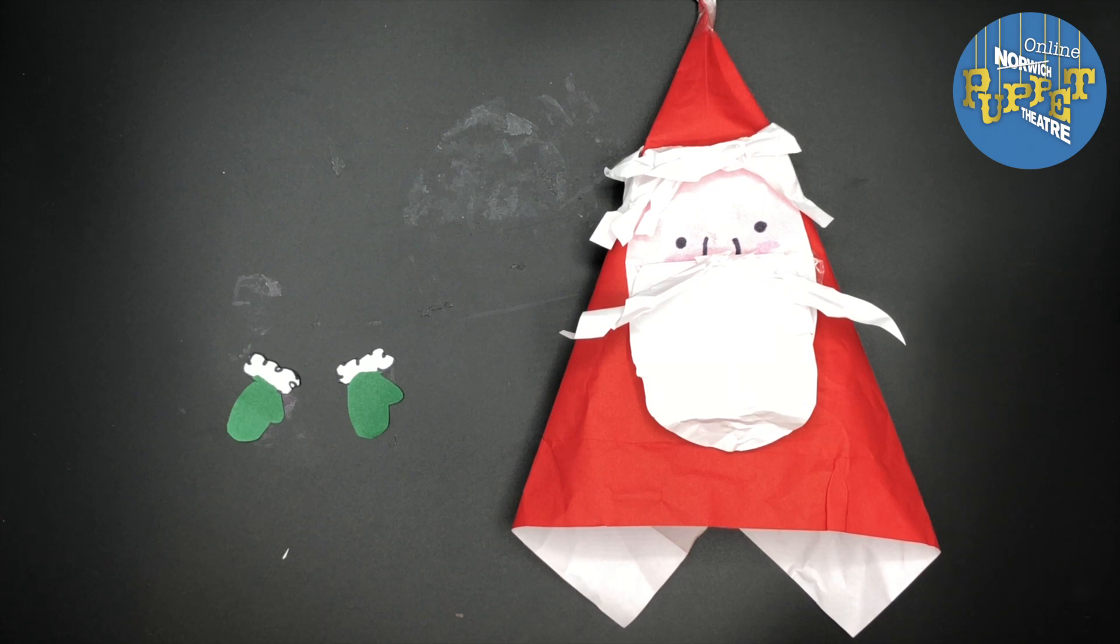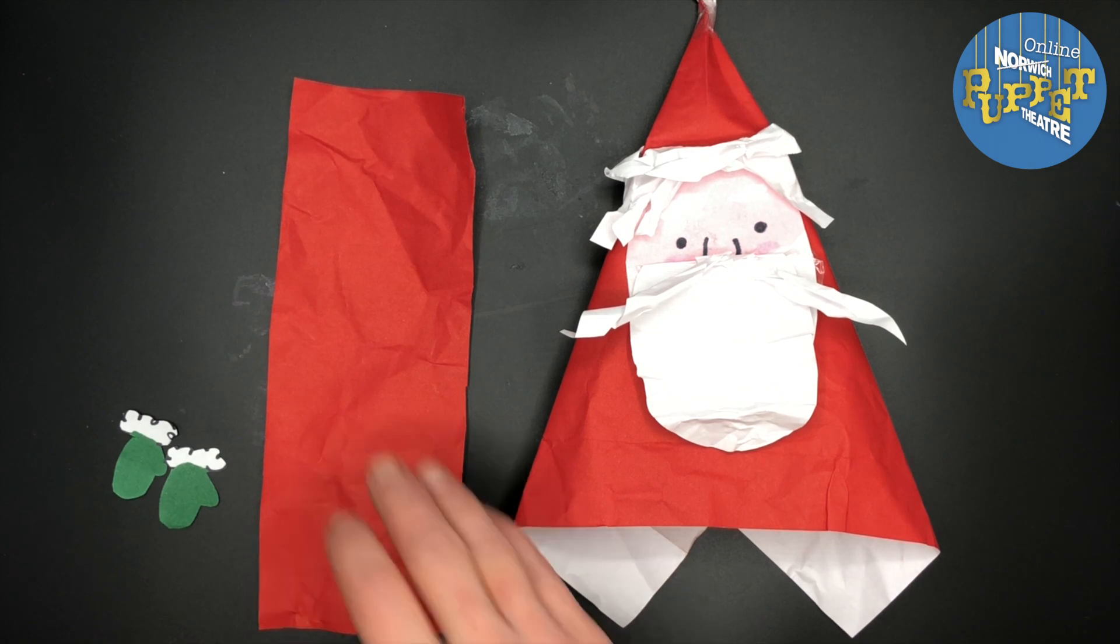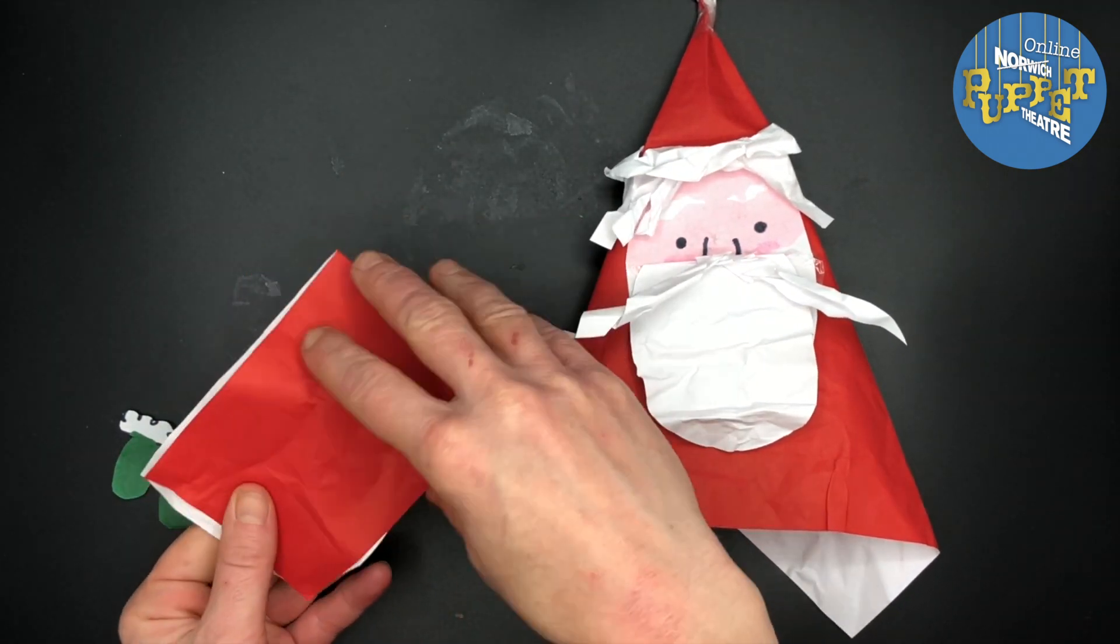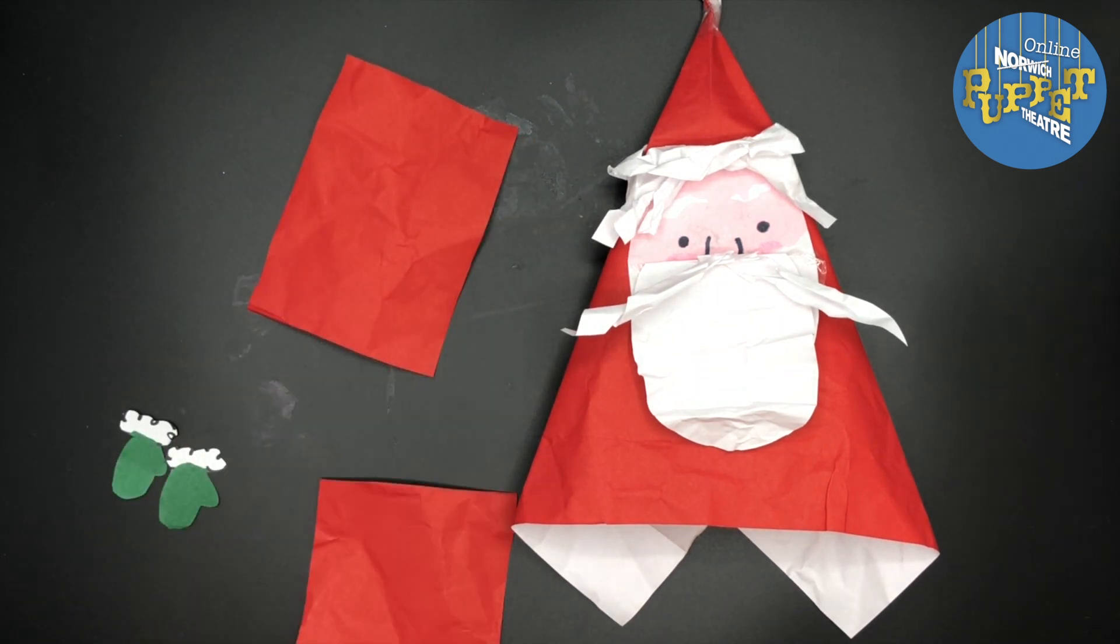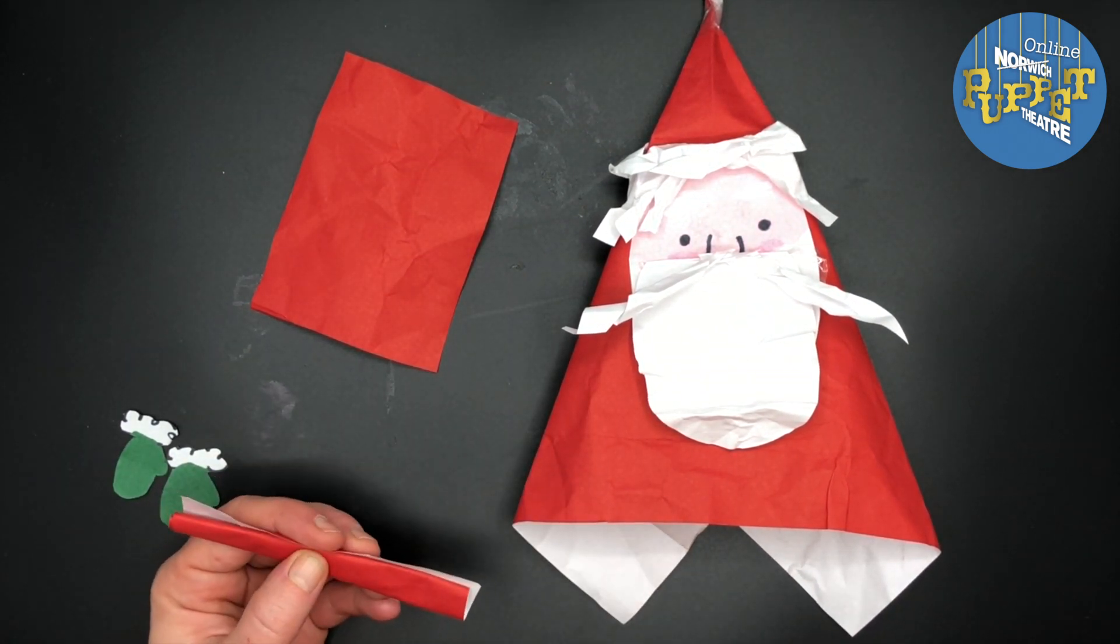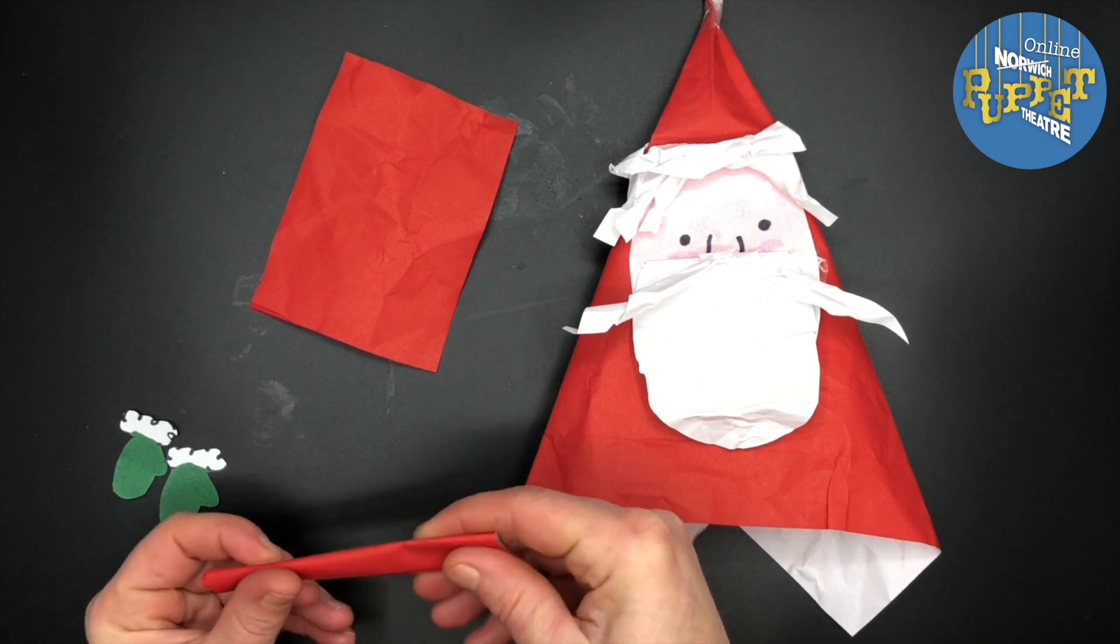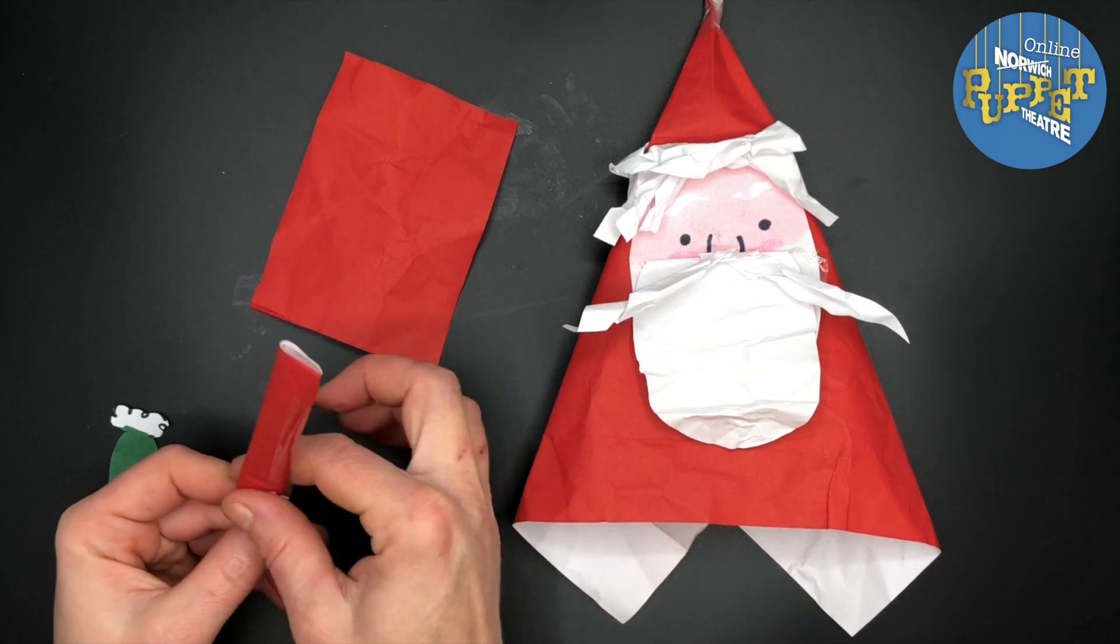And he needs some arms. I'm going to take another piece of paper, which I can color in or swap for wrapping paper. I'm going to fold this strip of paper in half and then cut it along my fold line. Taking one of these bits of paper, I'm going to roll it up and secure it with tape. Then I'm going to tape one of my mittens and tape it onto the end.